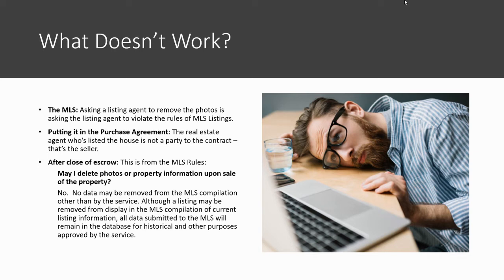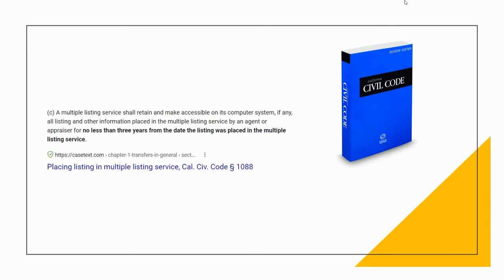After escrow closes, there's nothing the agent can do. This is actually from our MLS rules — the frequently asked questions. 'May I delete photos or property information upon sale of the property?' The answer is no, you can't do that. The MLS — once you've given it to them — has control over it. California Civil Code section 1088, paragraph C says the Multiple Listing Service shall retain and make accessible on its computer system all listing and other information placed in the MLS by an agent or appraiser, for no less than three years from the date the listing was placed in the Multiple Listing Service.